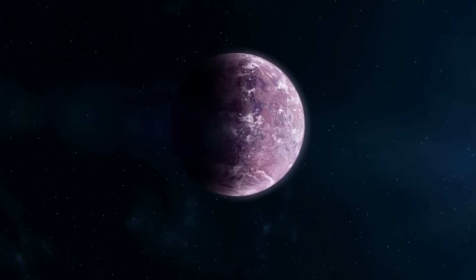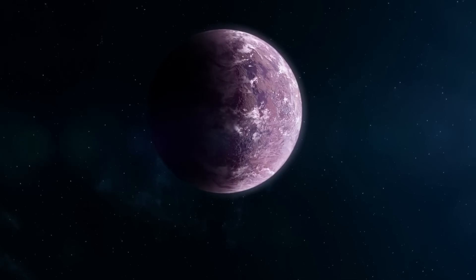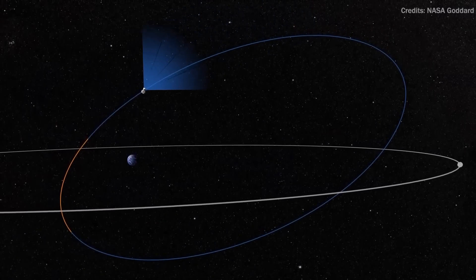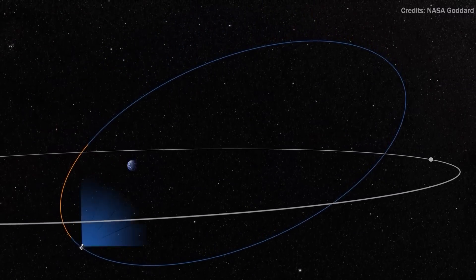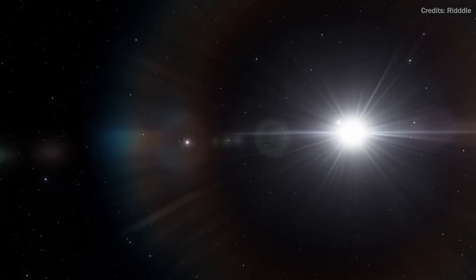2003 UB313 is now 97 AU from the Sun or more than 9 billion miles or 14.5 billion kilometers from the Sun and has reached its farthest point in its 560 year orbit. It will reach its closest point to the Sun in about 280 years, at a distance of 38 AU.